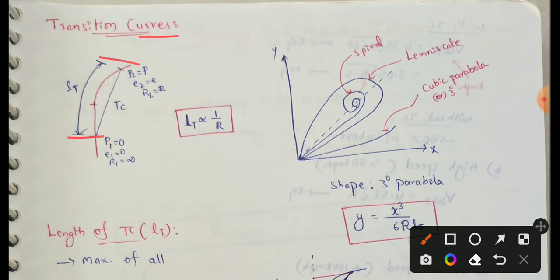This is length of transition curve. It starts with the curve. R1 equals infinity, so this radius is infinity.